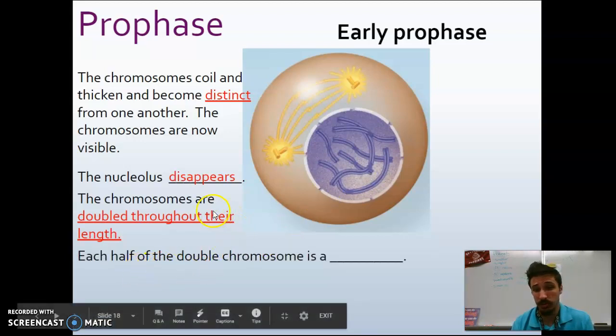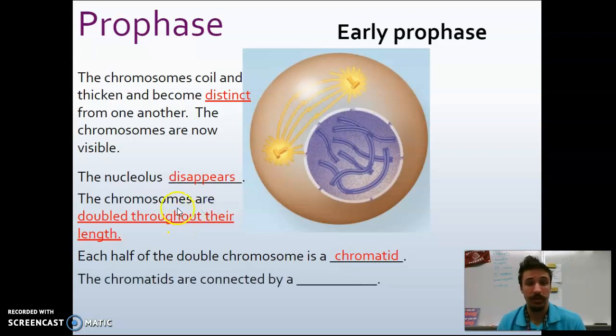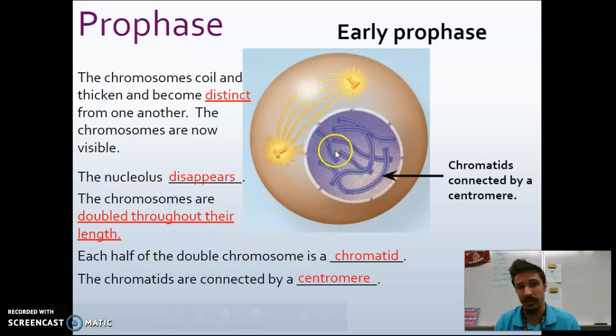And each half of a double chromosome is what we're going to refer to as a chromatid. So the chromosome was that kind of like X shape, so this would be one chromatid and this would be another chromatid. The two arms or each half of the chromosome we call a chromatid. And the chromatids are connected in the middle by a protein-like structure called a centromere. And you can kind of see that here. We see two individual arms right here, and then there's this kind of like dark purple region. That's the centromere connecting the two individual chromatids to form the chromosome.